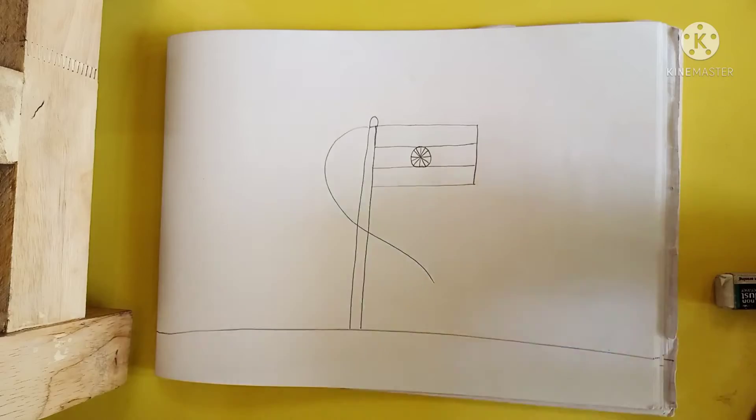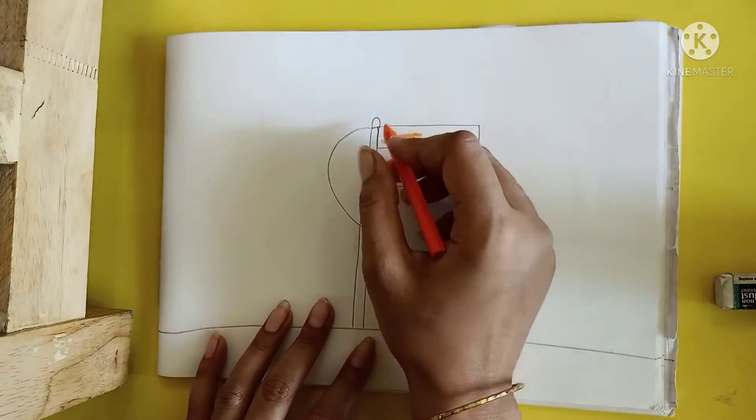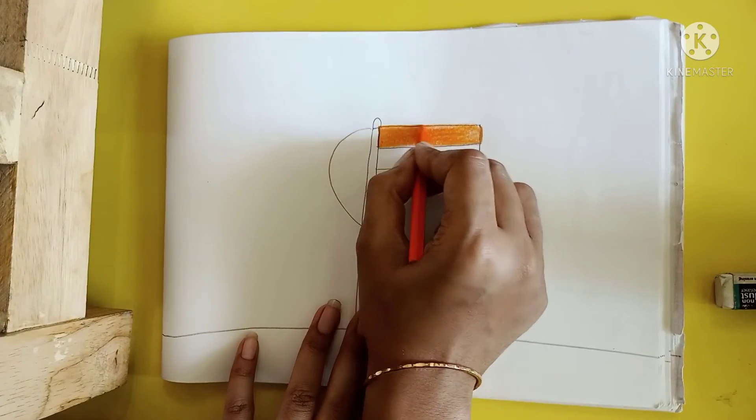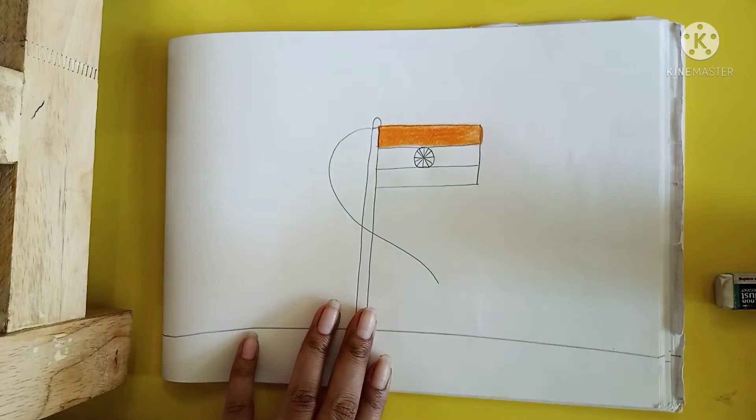Now start coloring with saffron color. Coloring in one direction and don't skip white part and don't move out of line.